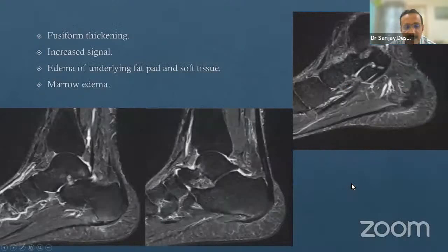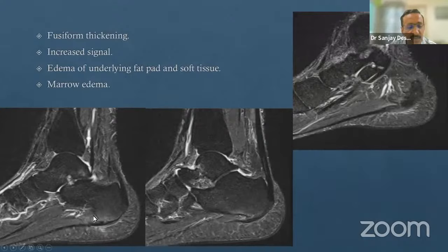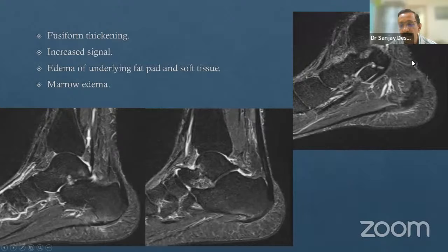On MRI, this is how a normal plantar fascia looks on axial images compared to an abnormal situation. In this patient, you see abnormal thickening of more than four millimeters of the posterior plantar fascia at the calcaneal insertion, edema in the underlying calcaneum, a small spur with marrow edema going anteriorly, and soft tissue thickening surrounding the insertion. All these findings together should be called plantar fasciitis—just thickening or just a spur without marrow edema does not qualify.